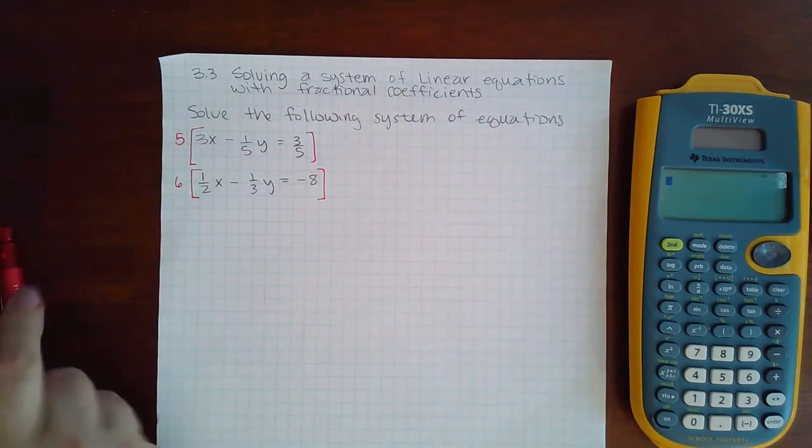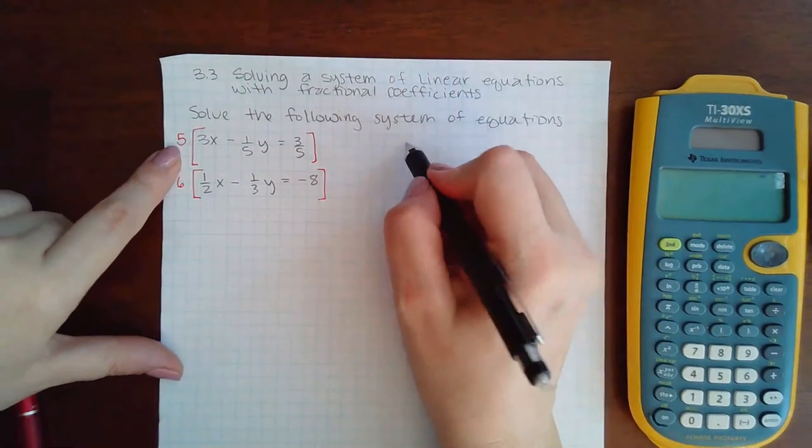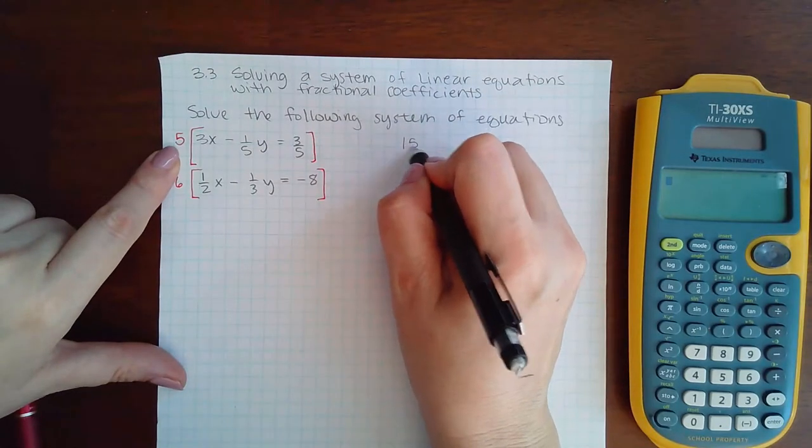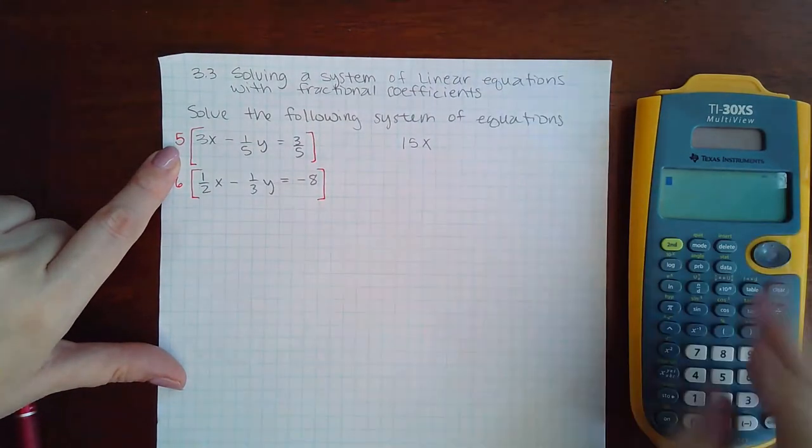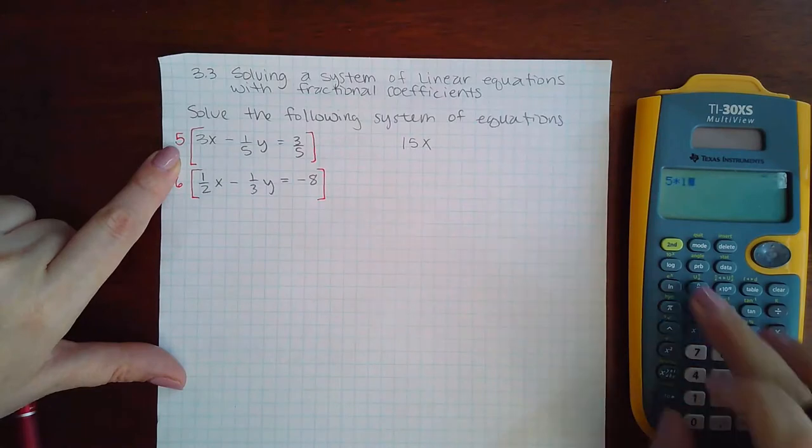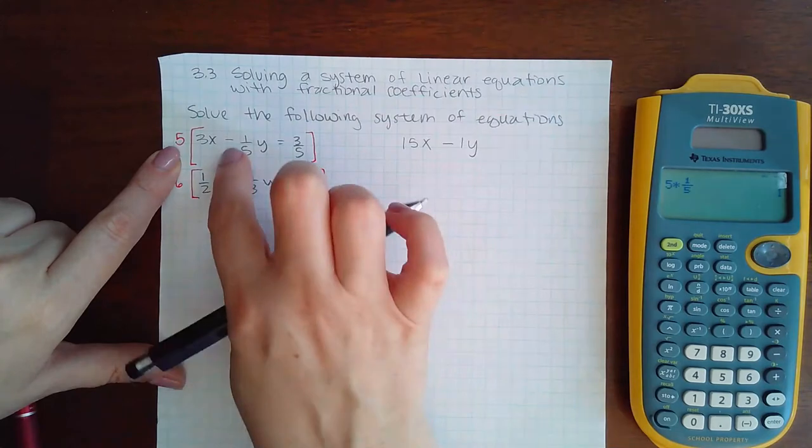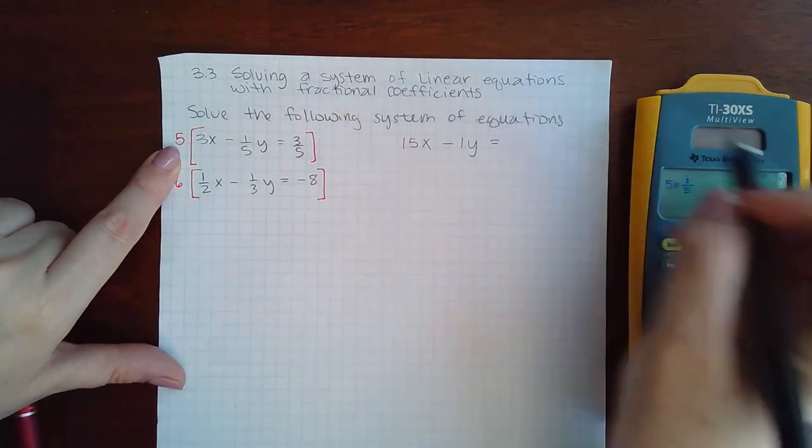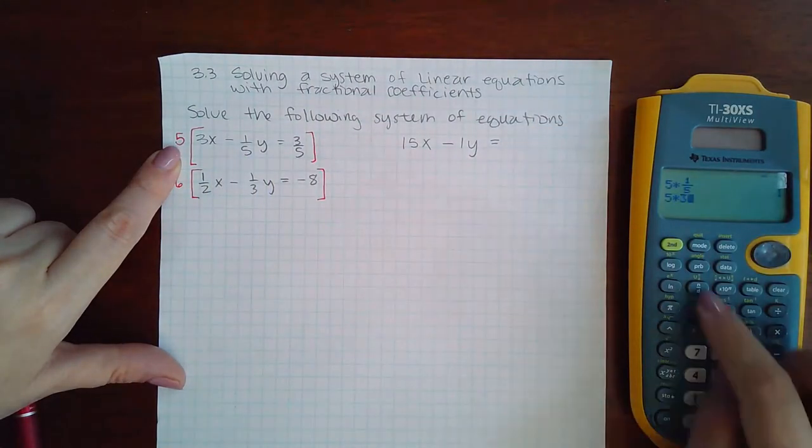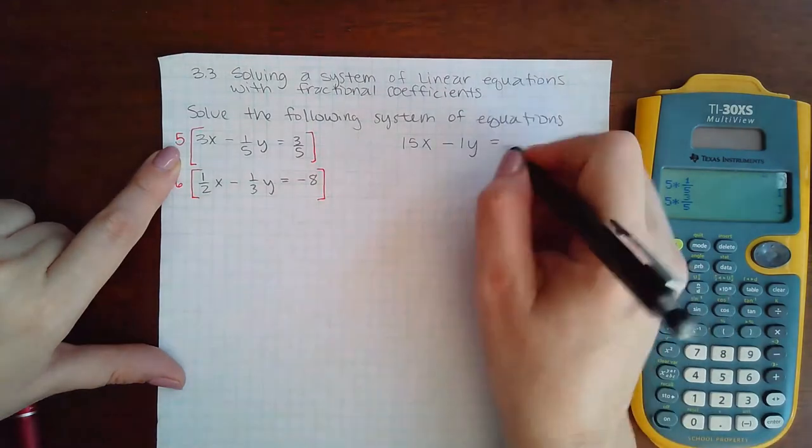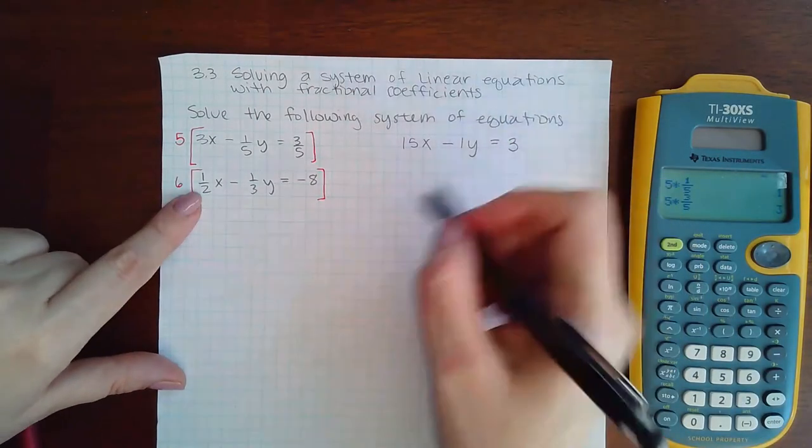The top equation becomes 15x, and 5 times 1 fifth is negative 1y, because of the minus sign, equal to 5 times 3 fifths, and I get positive 3.